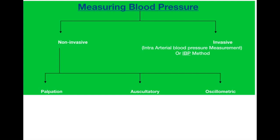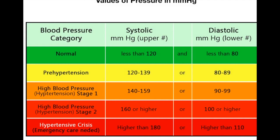There are mainly two types of measurement of blood pressure: the non-invasive method and the invasive method. Non-invasive methods are of three types: the palpatory method, the auscultatory method, and the oscillometric method. Here are some values of blood pressure you have to remember for clinical purposes.